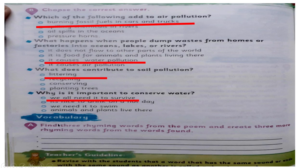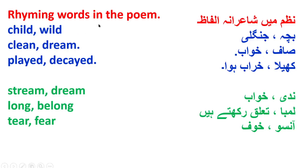Number one: the vocabulary — find the rhyming word from the poem and create three more rhyming words from the word found. Rhyming words یا rhythm words — یہ شاعرانا الفاظ ہیں جن کی آواز ایک جیسی ہوتی ہے۔ نظم میں جو rhyming words تھے: child اور wild — child کا مطلب بچہ، wild کا مطلب جنگلی — آواز ایک جیسی ہے۔